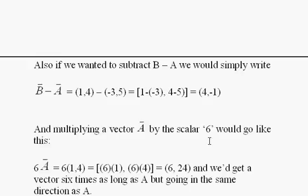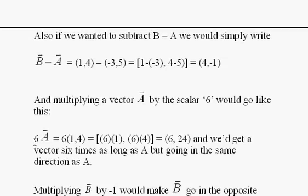Multiplying a vector by a scalar 6 would go like this. We simply multiply 6 times A, and we get the ordered pair out here, and you multiply each component. You multiply the x by 6 and the y by 6, and you get (6, 24),